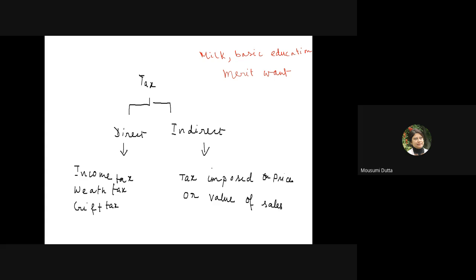Government gives subsidy to consumers under many circumstances for merit goods. For education, students may pay say 100 rupees per month, but the actual cost of education is much higher — the government bears the remainder. In terms of production, for a commodity like milk that is very important, the government may give subsidy to the producers so that the milk price remains very low.